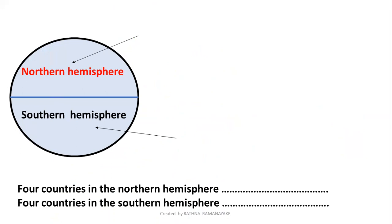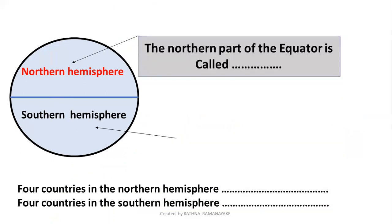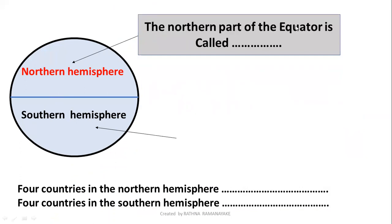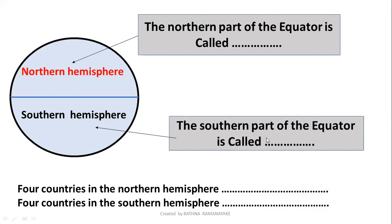The northern hemisphere and southern hemisphere. The northern part of the equator is called the northern hemisphere. The part of the equator below is the southern hemisphere.